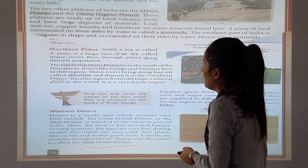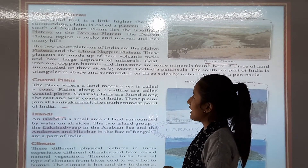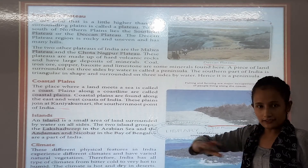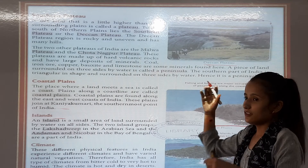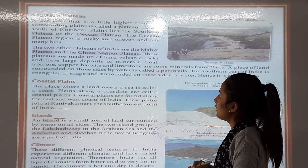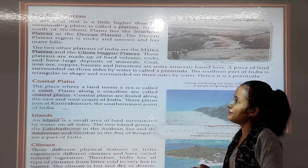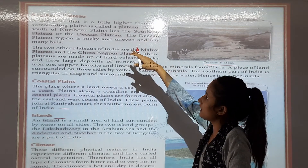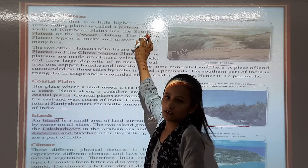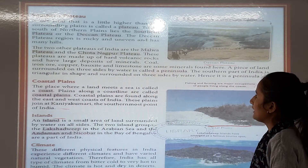Now, in the next page, you can see the southern plateau, also called the Deccan Plateau. A flat land that is a little higher than the surrounding plains is called a plateau. To the south of the northern plains lies the southern plateau or the Deccan Plateau. The Deccan Plateau is rocky and uneven and has many hills.